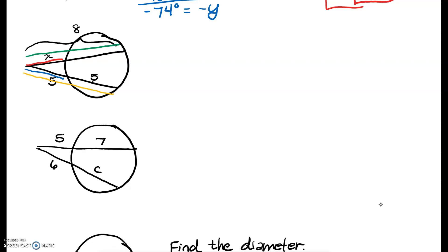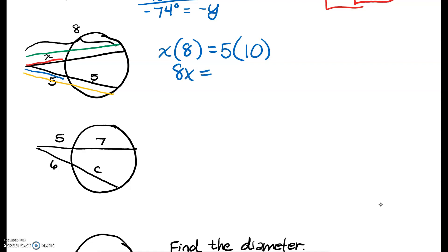Let's find the first outside part. The red part was x. The whole part, they tell us, is 8. Now for the other one: the blue part is 5, and the whole yellow part is the blue part plus the stuff on the inside — that's 10. 5 plus 5 is 10. So we end up with 8x equals 50. I'm going to divide both sides by 8, and I notice that 2 goes into both of these, so x equals 25 over 4.